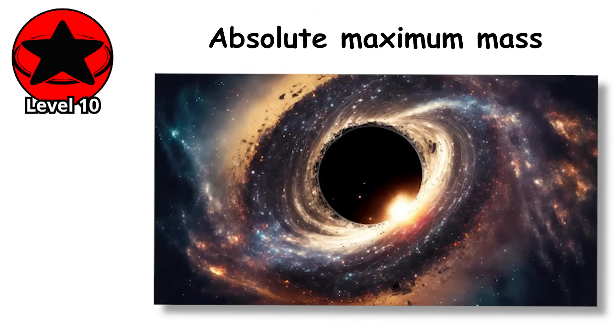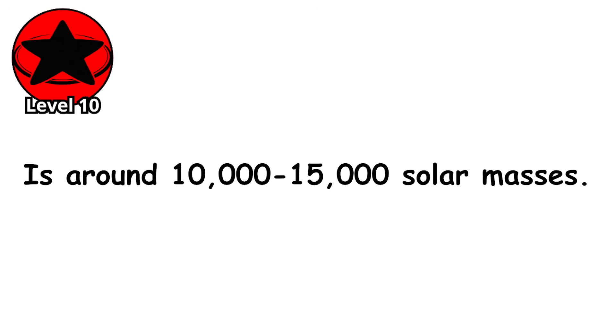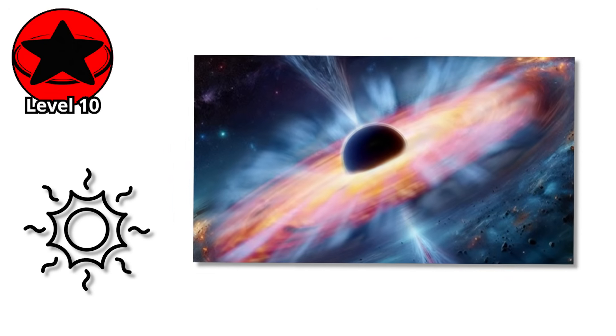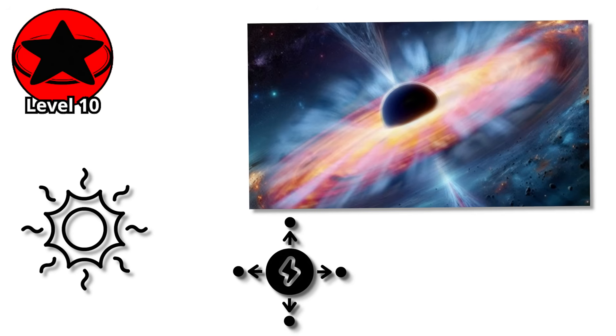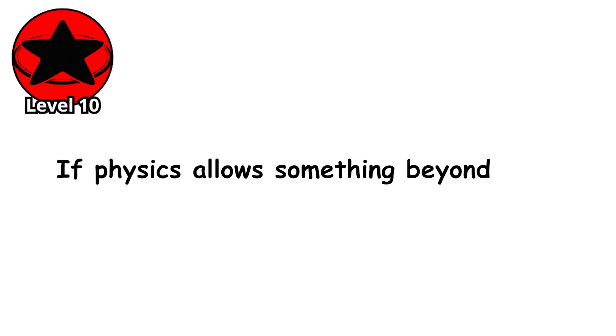Current models suggest the absolute maximum mass for any star-like object is around 10,000 to 15,000 solar masses. Beyond that, the radiation pressure from the central energy source would blow the object apart faster than gravity could hold it together. If physics allows something beyond this, the universe has almost certainly already built it.